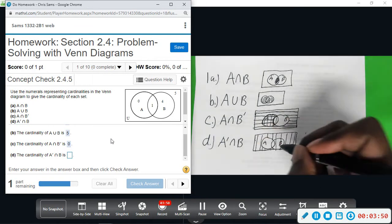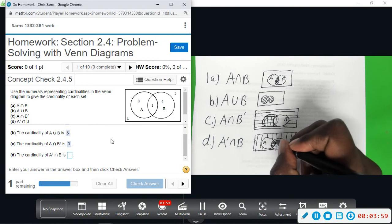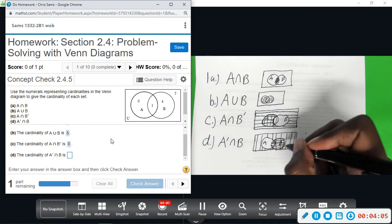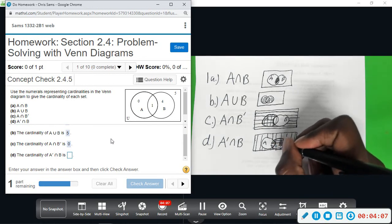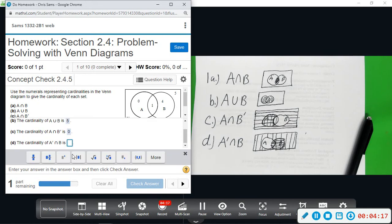Intersect B, so the whole circle B. The double shading is the part of B that does not overlap with A, because this part only has horizontal lines while this part has both horizontal and vertical. So it would be this part of B that has 4, not including that 1. So we get 4 for the cardinality of A complement intersect B.